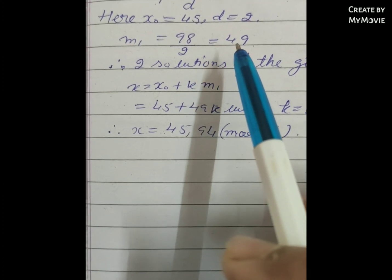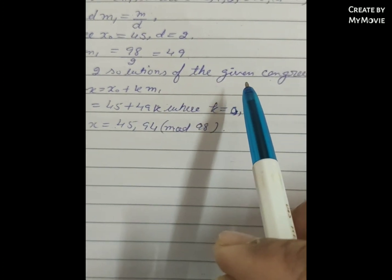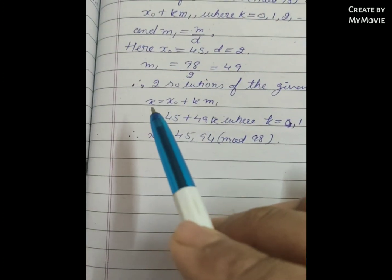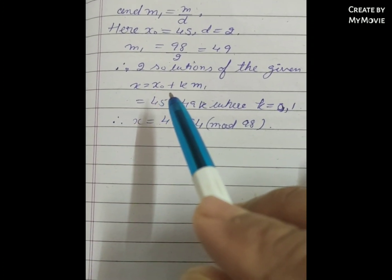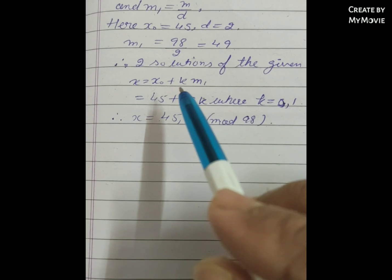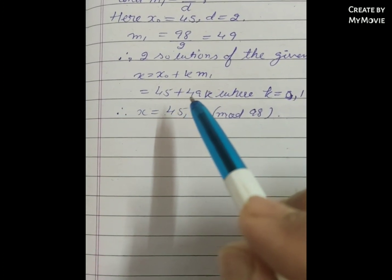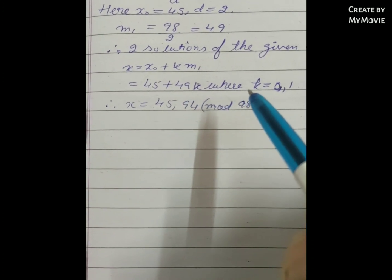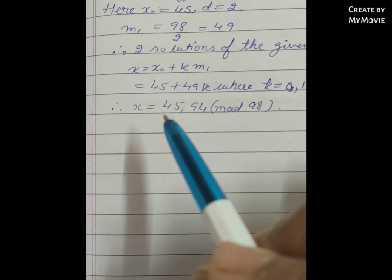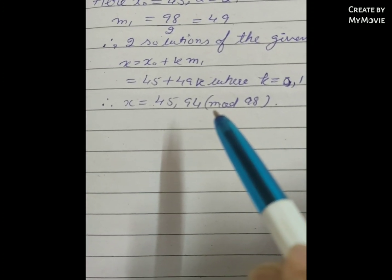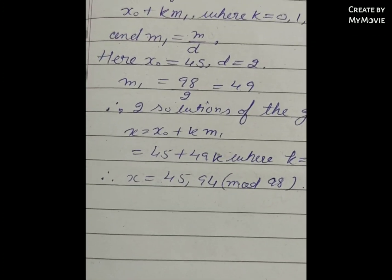So the two solutions of the given congruence are x = x₀ + k·m₁ = 45 + 49k, where k = 0, 1. Therefore x ≡ 45 (mod 98) and x ≡ 94 (mod 98).